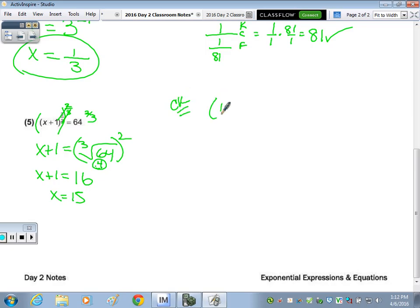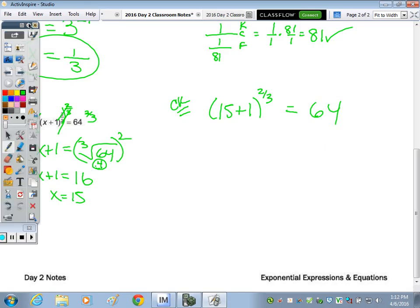So is 15 plus one to the two-thirds equal to 64? It is three halves. I couldn't see that. Thank you. So it should be three over two. So 16, because I'm doing the check in my head, I'm like, you can't take the cube root of 16. So 16 to the three halves means the square root of 16 cubed. Square root of 16 is 4, and 4 cubed is 64. It checks.